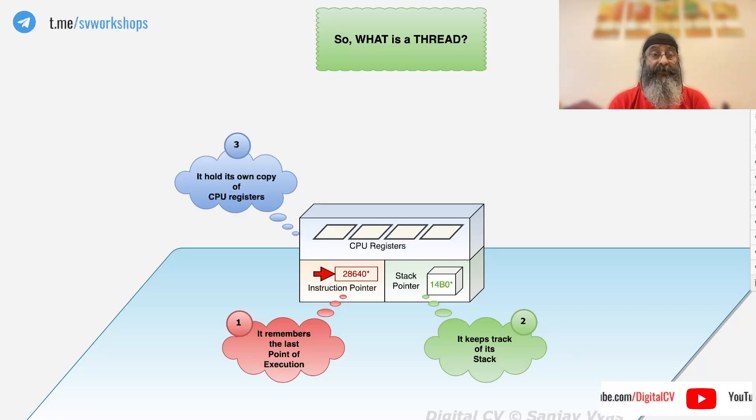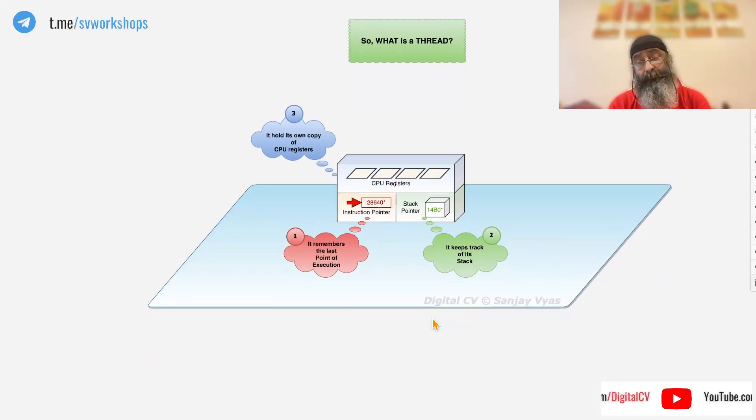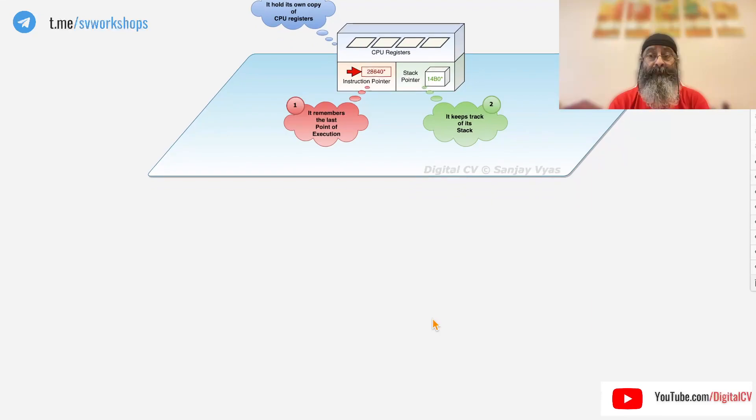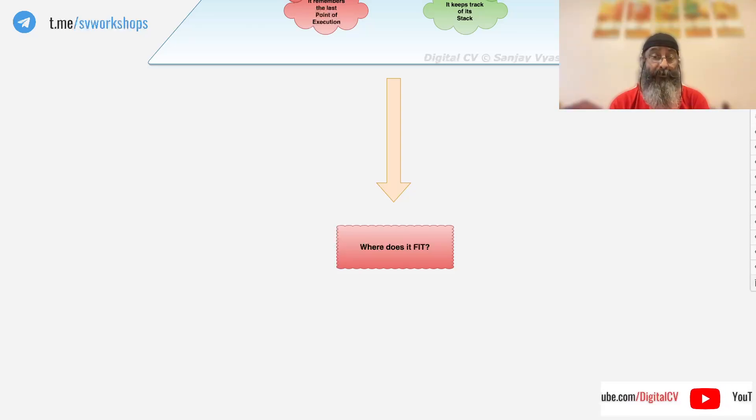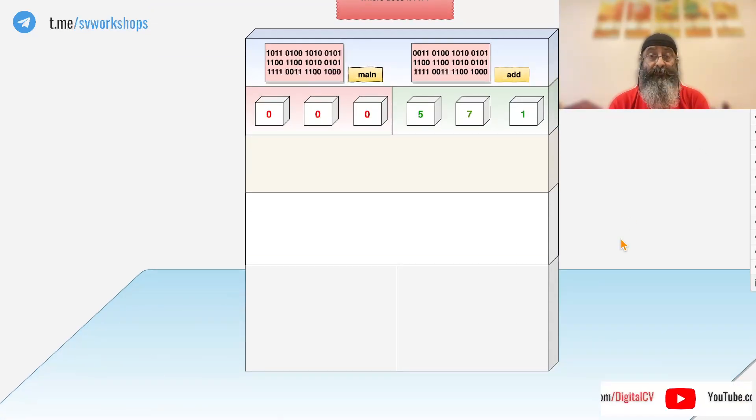If you have seen the process map video on this channel, let's see where the thread fits into the process map. We know that a process map is created whenever any program is executed and loaded in memory. It contains multiple segments like code or text, BSS, data, heap and so on.